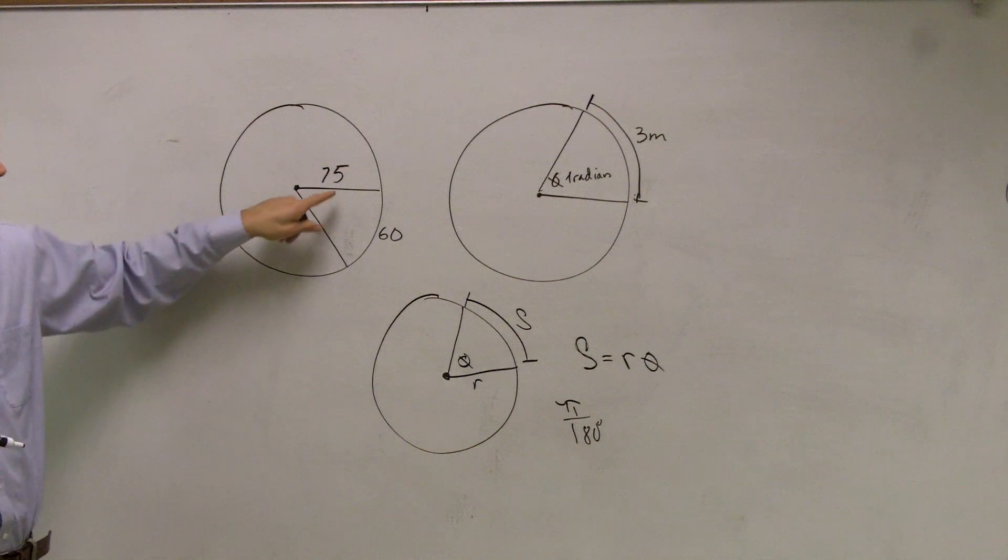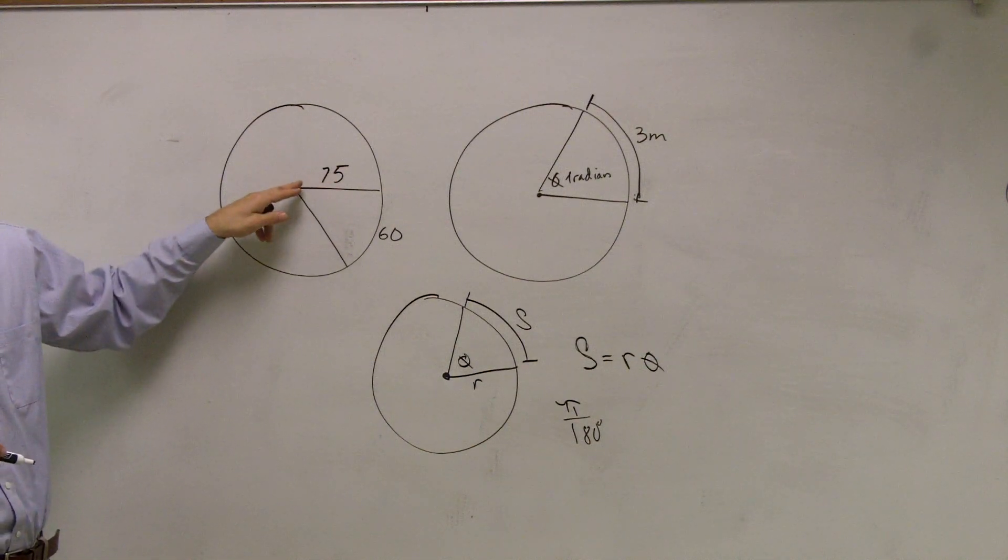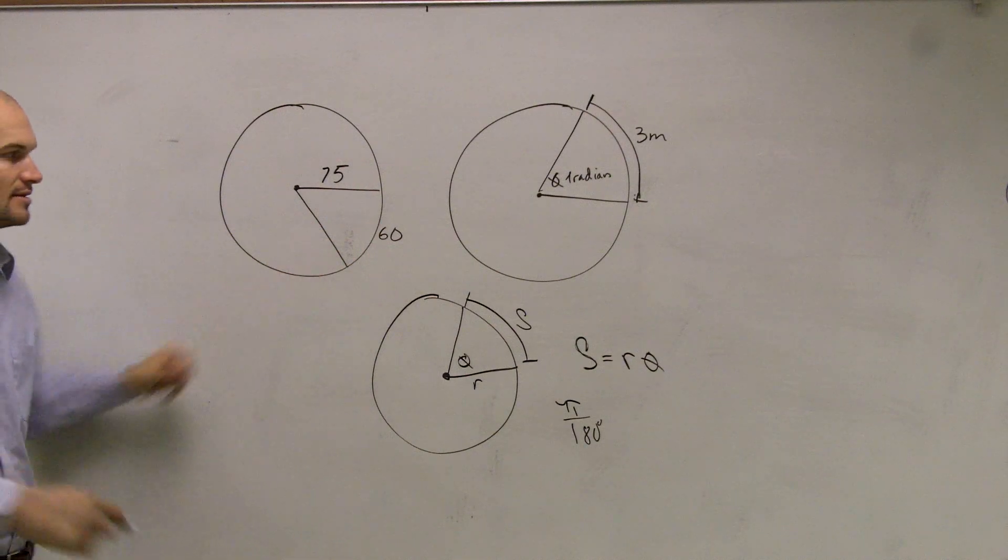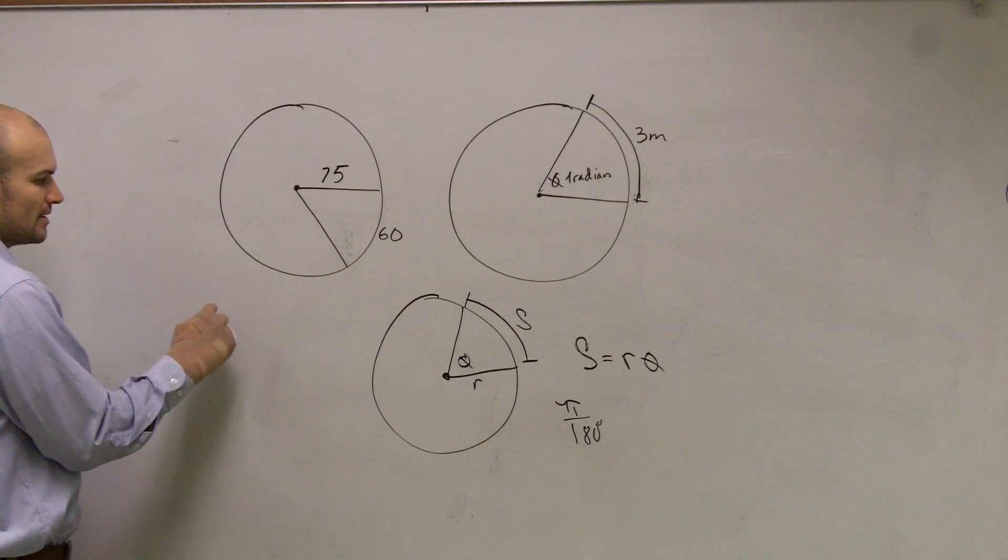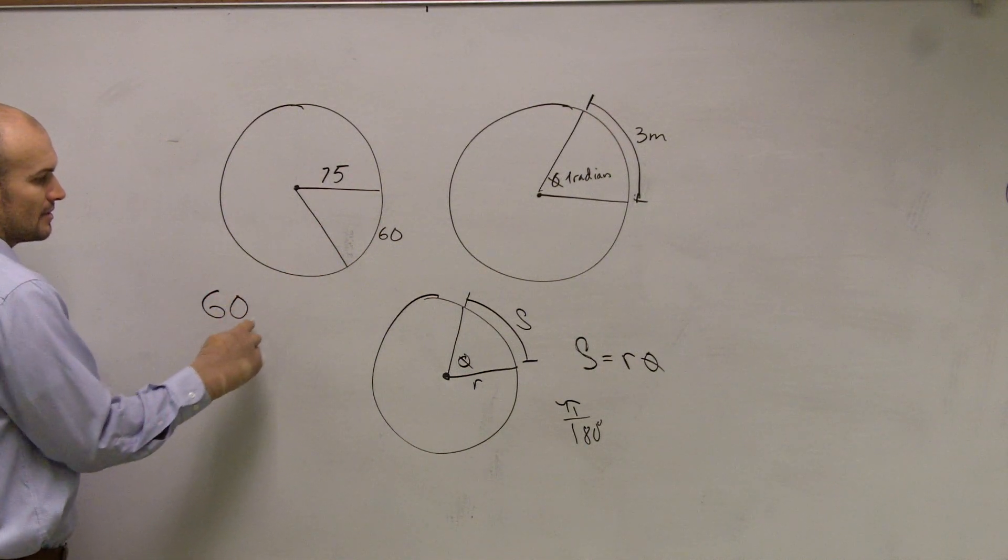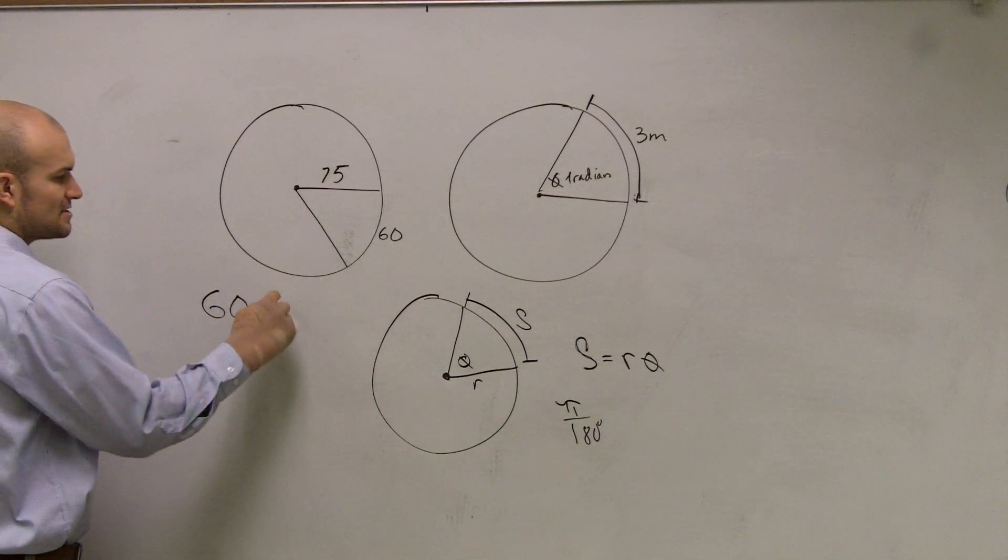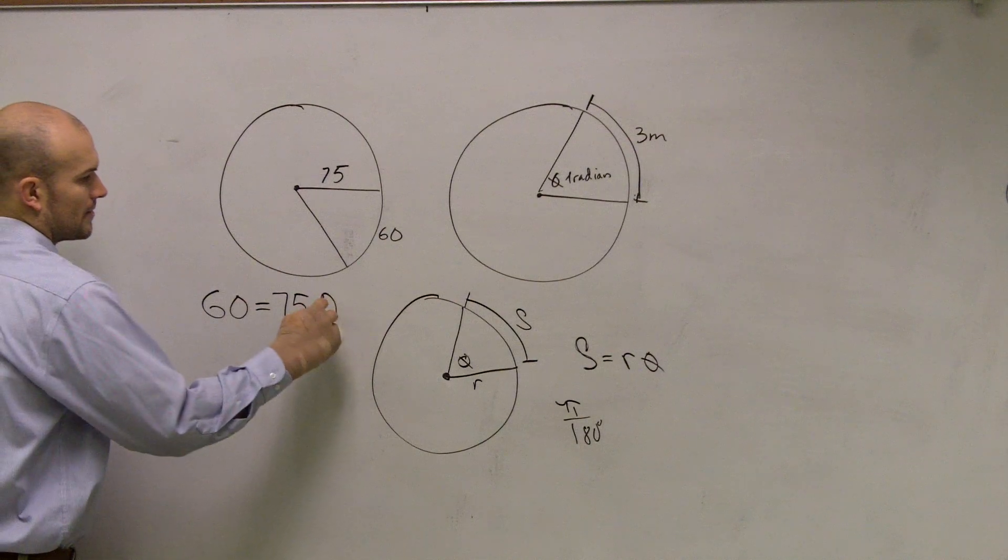So let's look at this problem. Here we don't have any units, but we have a radius that's 75 and an arc length that's 60. All I'm going to do is plug into the formula. So I say 60 equals my radius, which is 75, times theta.